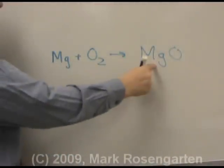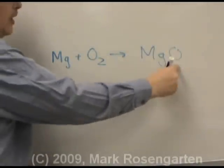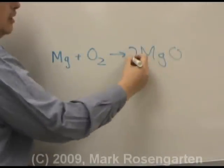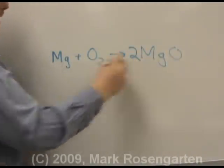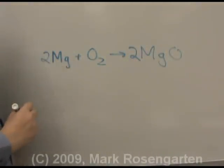Balancing the equation: one magnesium on each side, two oxygens on the left and one on the right, so we place a two in front giving two magnesiums on each side. This reaction is balanced.